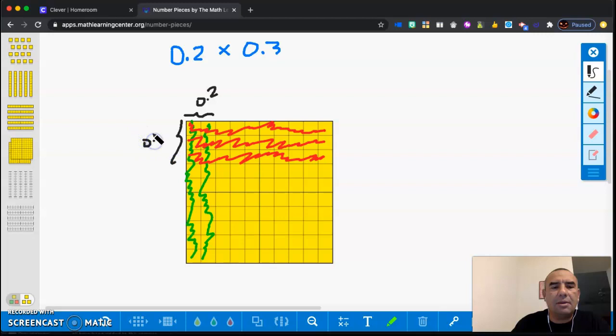Alright, so how many parts overlap? One, two, three, four, five, six. 6/100. 6/100 overlapped, and that's the answer.